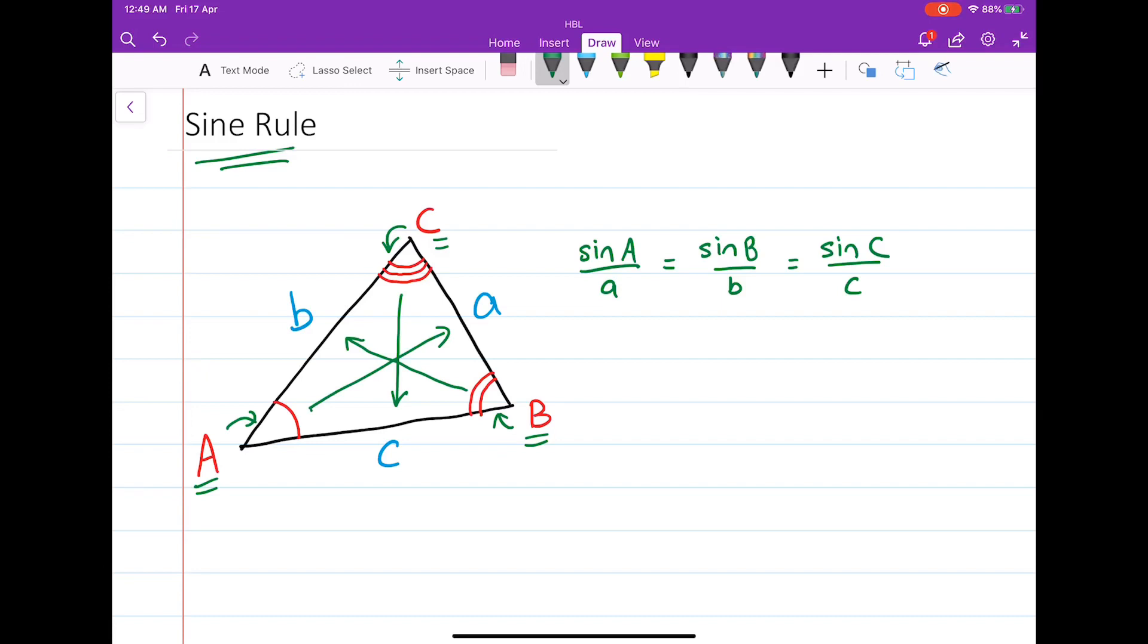You can also write it this way as the reciprocals of all these fractions: length a over sine A equals length b over sine of angle B equals length c over sine of angle C. And this is what we call sine rule.